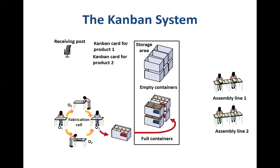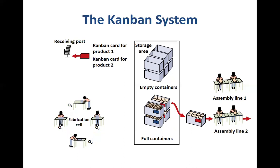When product two has to be made, a card is placed on an empty container and brought to the fabrication cell. At the fabrication cell they make the product, and from there the full containers are brought to the storage area. These full containers are then brought to assembly line two, which processes the items and produces the finished products. This is how the cards signal what to make and how much to make, since each container holds a specified quantity.